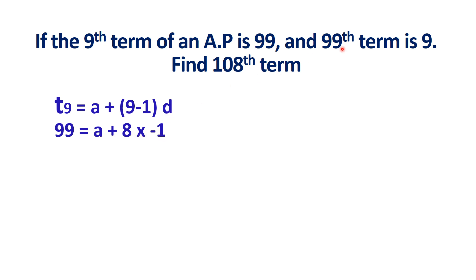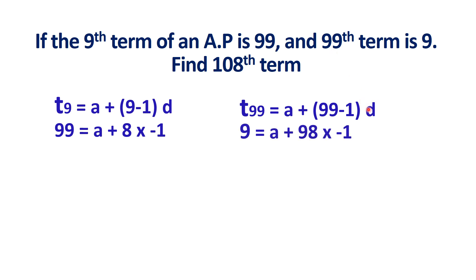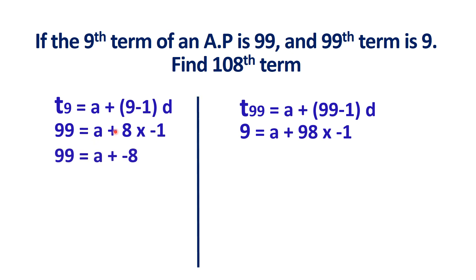There is also another equation for the 99th term: T99 equals A plus 99 minus 1 into D, giving 9 equals A plus 98 into minus 1. We may proceed with either equation. Taking the first one: 99 equals A plus minus 8, so 99 plus 8 gives A equals 107.